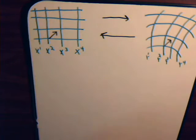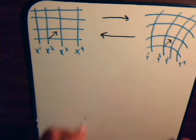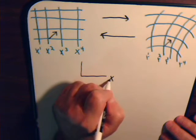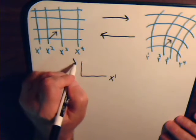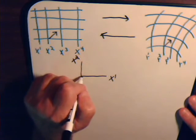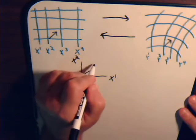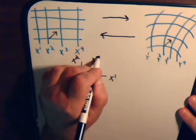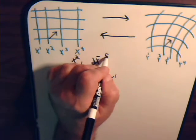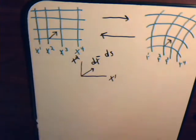Here we have a displacement vector dx. If we have just a two-dimensional system with axes x1 and x2, and then we have a displacement vector dx, the magnitude of that, of course, is ds. That, in general, is the magnitude of arc length.